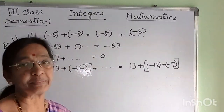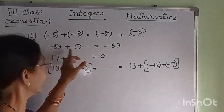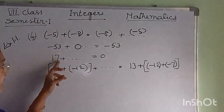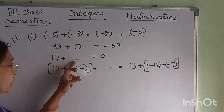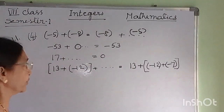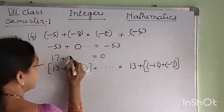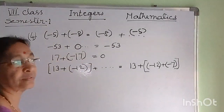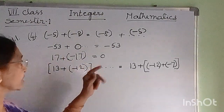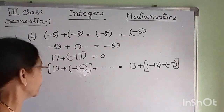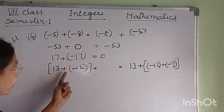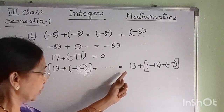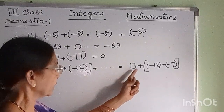Next: 17 plus blank equals 0. The answer is minus 17. Because 17 plus minus 17 equals 0.